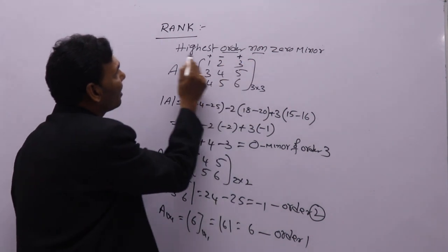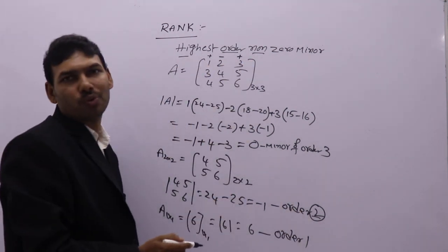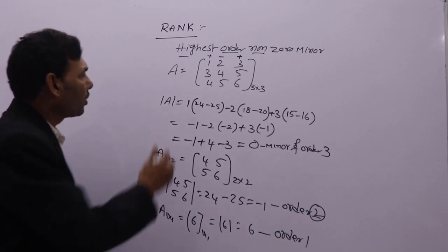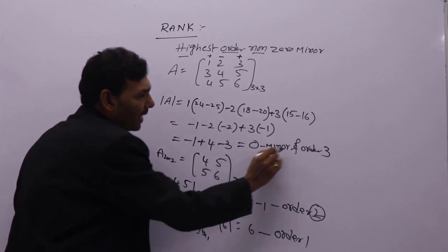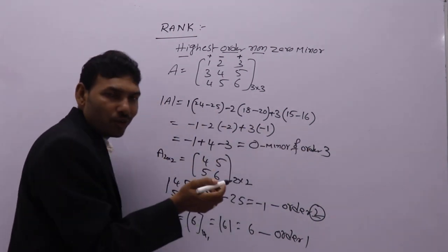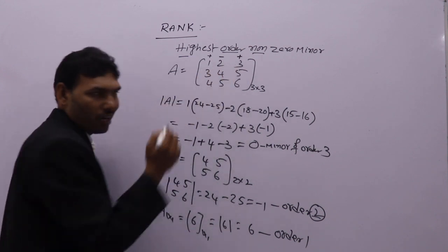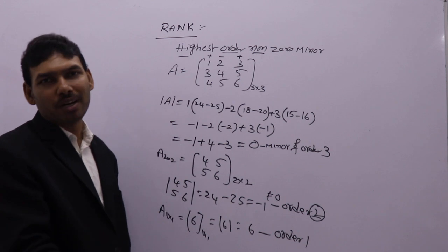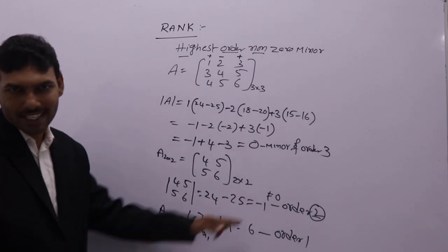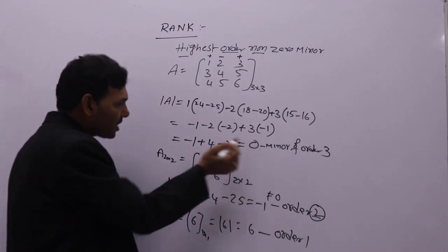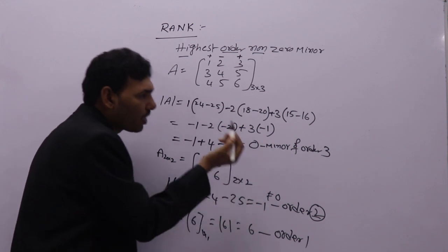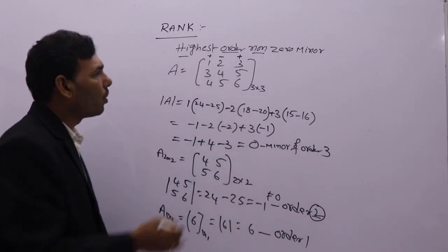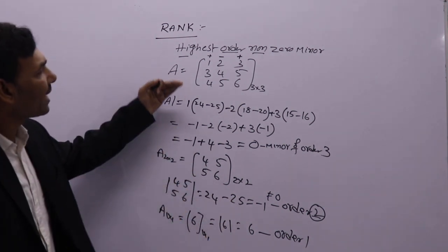Rank of A is 2. Why? The highest order non-zero minor is of order 2. So from this: if your matrix has order 3 by 3 and the determinant is 0, rank is not equal to 3. Then you delete one row and one column to get a 2 by 2 matrix. If that determinant is not equal to 0, rank becomes 2. No need to find the next one, because that is the highest non-zero minor. If you get a non-zero number from the 3 by 3 determinant, then rank equals 3.